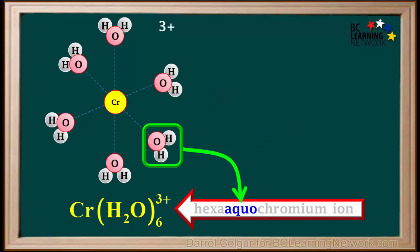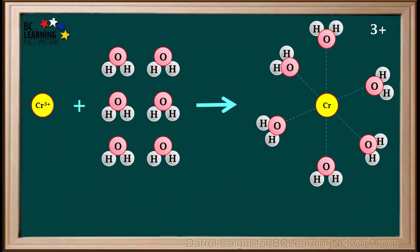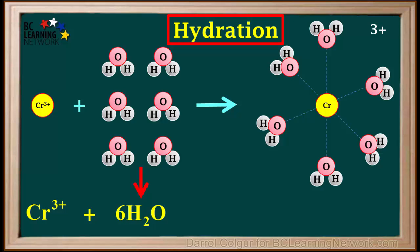The system for naming complex ions uses aquo to represent a water molecule weakly bonded to a central atom. The process of a positive ion being surrounded by water molecules and forming a hydrated ion is called hydration. This is different than hydrolysis, which we'll look at soon. The equation we can use for the hydration of the Cr3+ ion is Cr3+ + 6H2O gives Cr(H2O)6 3+.